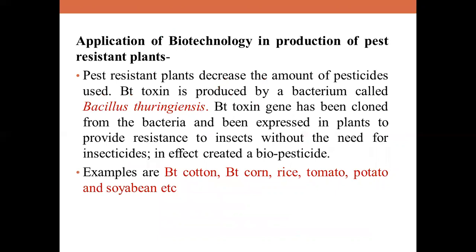For pest-resistant plants, an important example is the Bt toxin from the bacterium Bacillus thuringiensis. Pest-resistant plants decrease the amount of pesticides used. The bacterium produces a toxin encoded by the cry gene; this gene has been cloned and expressed in various plants to provide resistance to insects without insecticides. This has led to development of Bt cotton, Bt corn, Bt rice, tomato, potatoes, soybean, etc.